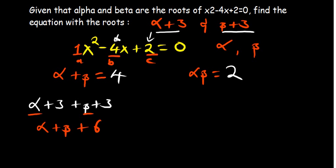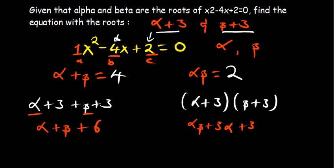On the other side, we need to multiply. The roots of our new equation are alpha plus 3 times beta plus 3. Multiplying gives us alpha beta plus 3 alpha plus 3 beta plus 9. We can factorize a 3 from the middle terms: alpha beta plus 3 times alpha plus beta plus 9. We've expressed this in the form of addition and multiplication of alpha and beta.